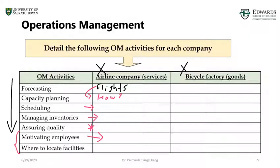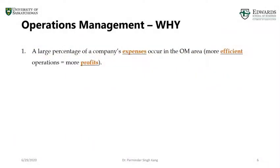Now it's your turn — you can apply these same activities to a bicycle factory and start filling out the rest of the table. The next question is why we need to look into operations management. OM is the area that directly relates to producing goods or services, which means most of the expenses occur in the operations management area. The idea is to make it more effective and efficient so that profitability can be increased by reducing cost.